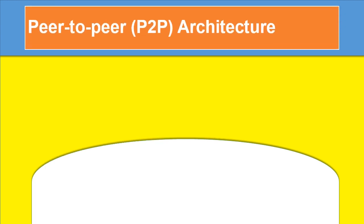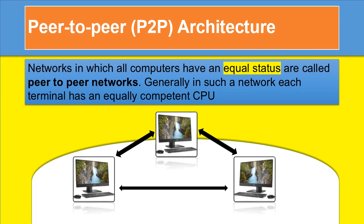Peer-to-peer architecture: Networks in which all computers have an equal status are called peer-to-peer networks. Generally in such a network, each terminal has an equally competent CPU.